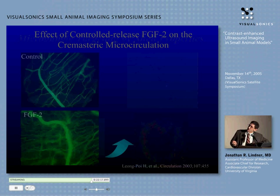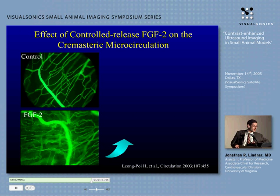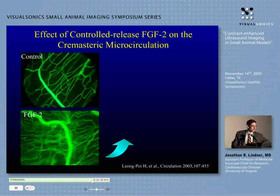These are examples of alpha-V targeted micro-bubbles targeted against angiogenic phenotype vessels. Using intravital microscopy we can actually look at micro-bubbles starting to adhere to FGF2-stimulated vessels.